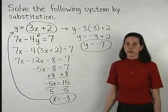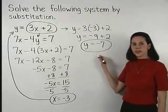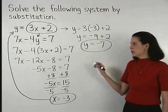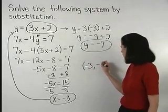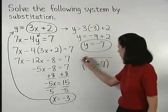Since x equals negative 3 and y equals negative 7, our solution is the ordered pair negative 3, negative 7.